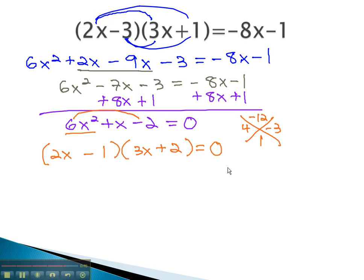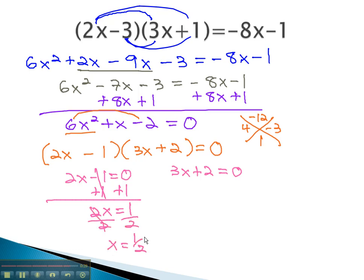We can now solve this expression by setting each factor equal to zero. We solve these quickly by adding 1 to both sides to get 2x equals 1, dividing by 2 to find that x equals 1 half. The other equation we can solve by subtracting 2, giving us 3x equals negative 2, and dividing by 3 to get x equals negative 2 thirds.